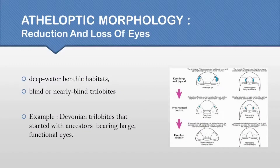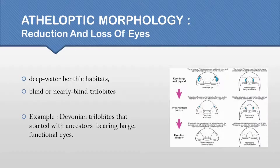In this picture, the eye size of the trilobite reduces. It was a benthic trilobite living in dim light. The absence of light led them to reduced eye size, turning them blind or nearly blind.